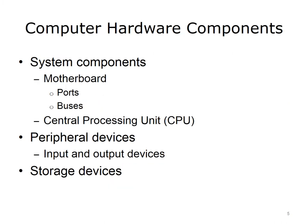There are three main types of computer hardware components. System components, which include the motherboard with its associated ports and buses, and the central processing unit or CPU. Input devices and output devices, which are collectively known as peripheral devices, and storage devices. We will talk about each of these in detail during the rest of this lecture and in the next lecture as well.